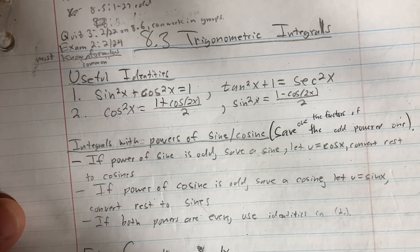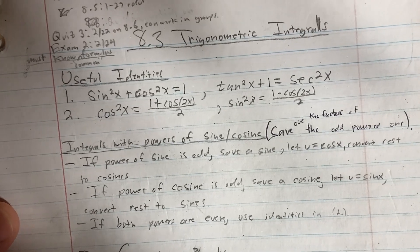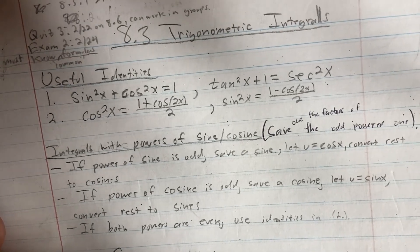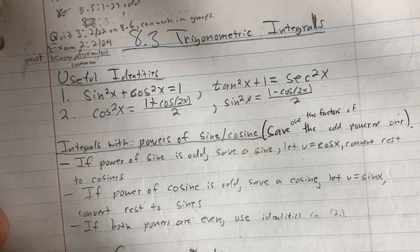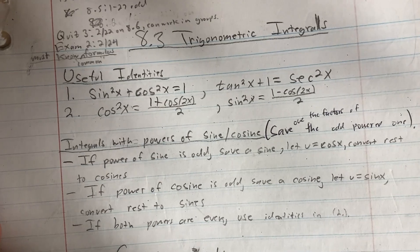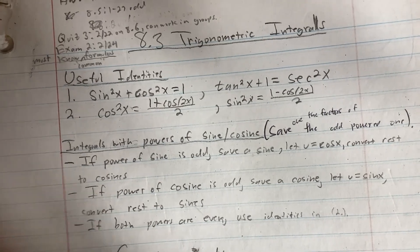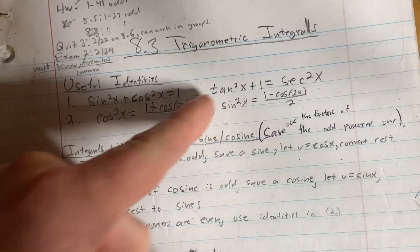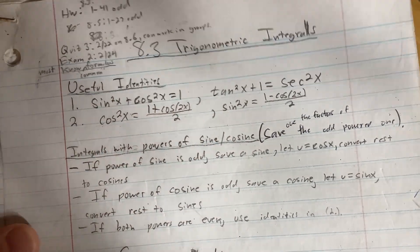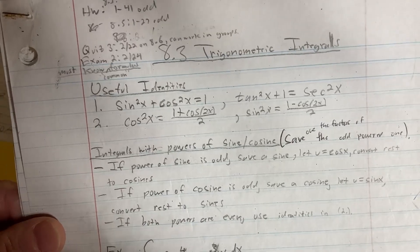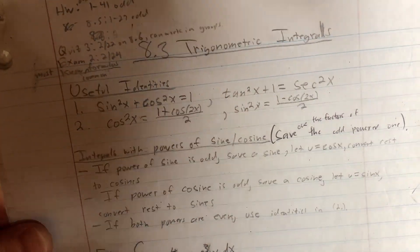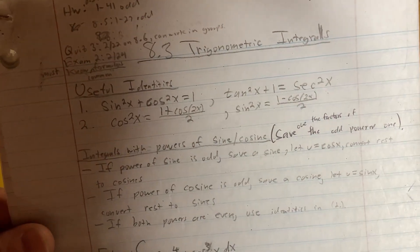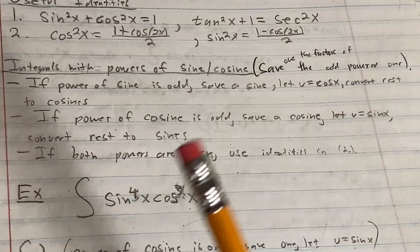Likewise, tan squared x plus 1 equals secant squared — that's also one you definitely want to know. You might say you can derive it from the Pythagorean identity, and yeah, you can, but you really want to just memorize it because it makes things so much easier.